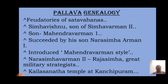The genealogy flows as follows: Simhavarman II, then Simhavishnu, then his son Mahendravarman I, and then Narasimhavarman I. Simhavishnu's able son was Mahendravarman I, who was succeeded by his son Narasimhavarman I. Other prominent Pallava rulers include Narasimhavarman II, also called Rajasimha, and Nandivarman II. The last Pallava ruler was Aparajita.